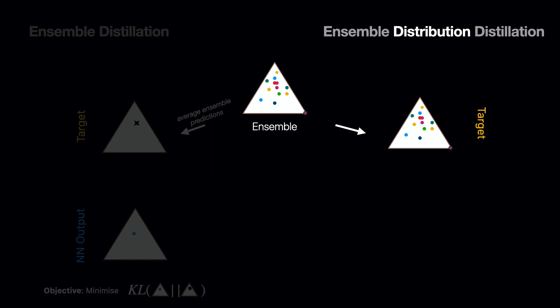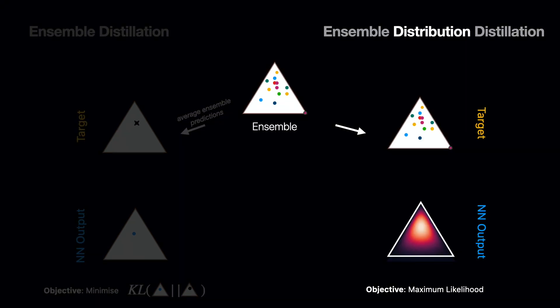If we, on the other hand, distill the ensemble predictions into the prior network, we can retain the information about both the mean and the diversity of the ensemble. Recall that the prior network parameterizes a distribution over categorical distributions. Hence, it can distill information not only about the mean of the ensemble predictions, but also about how they are distributed on the simplex. Consequently, a prior network can learn how the diversity of the ensemble predictions changes depending on its input.